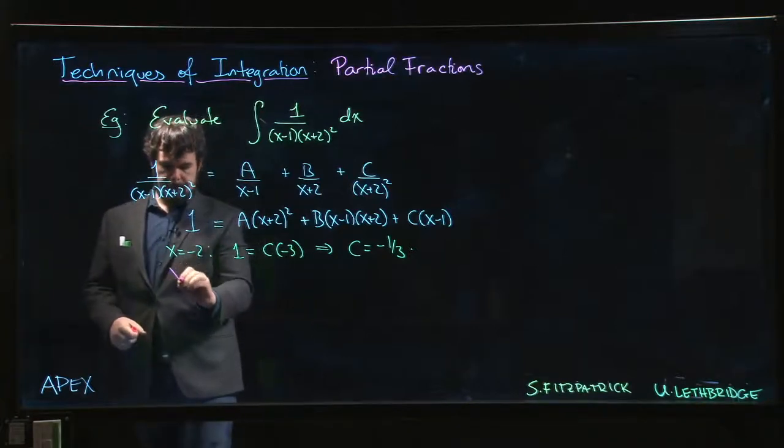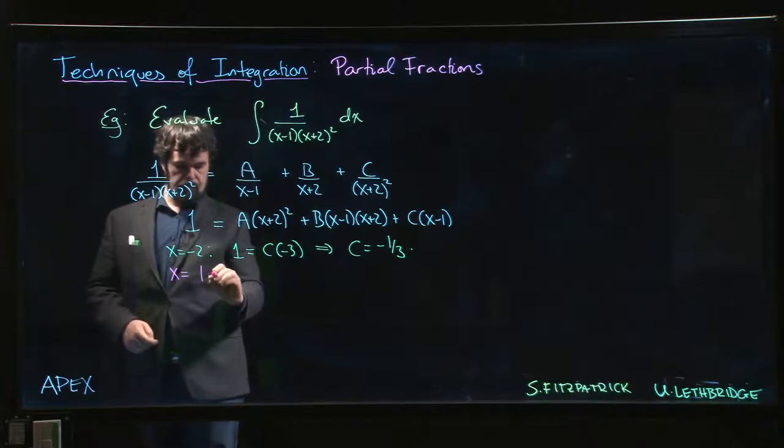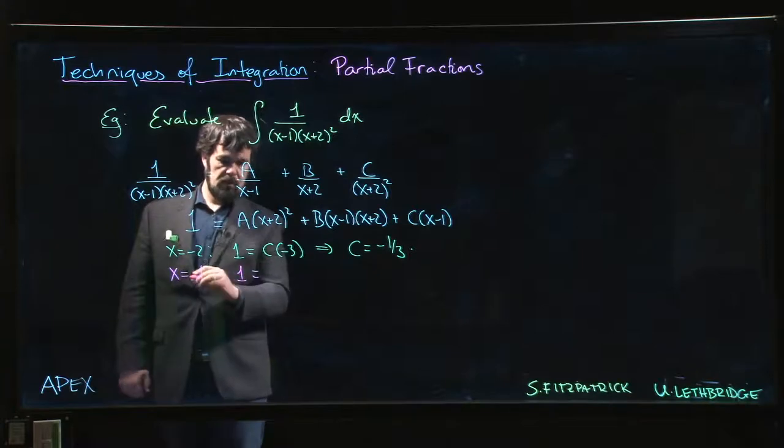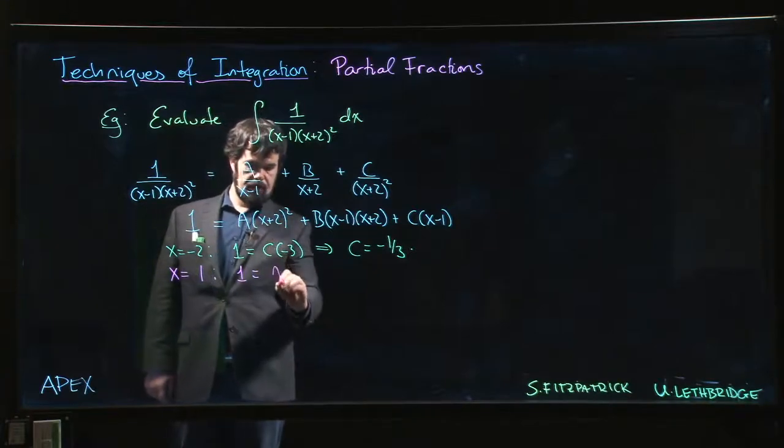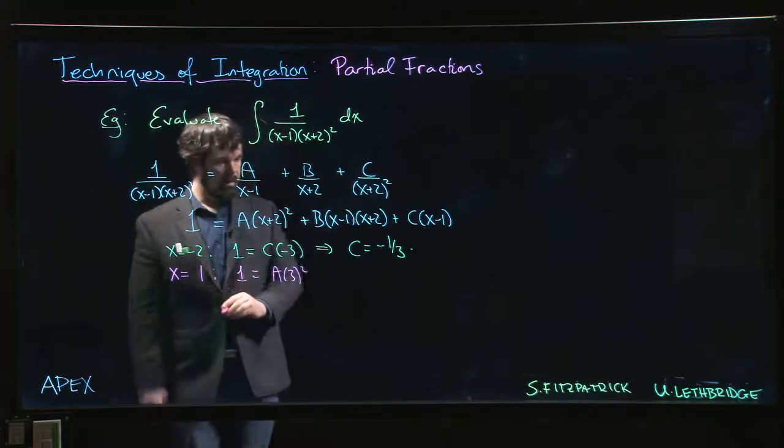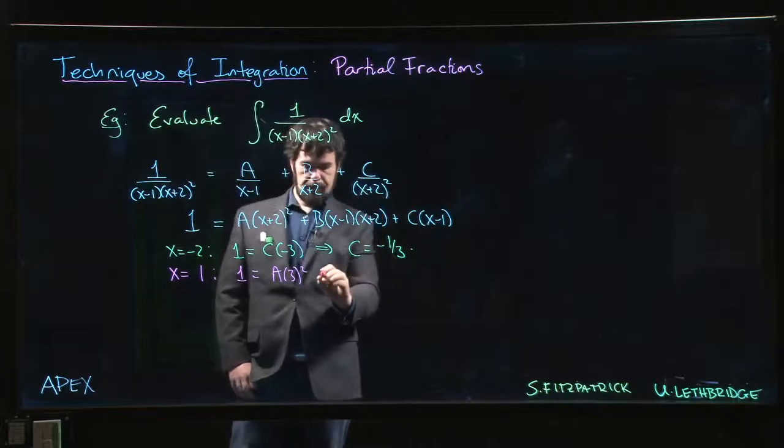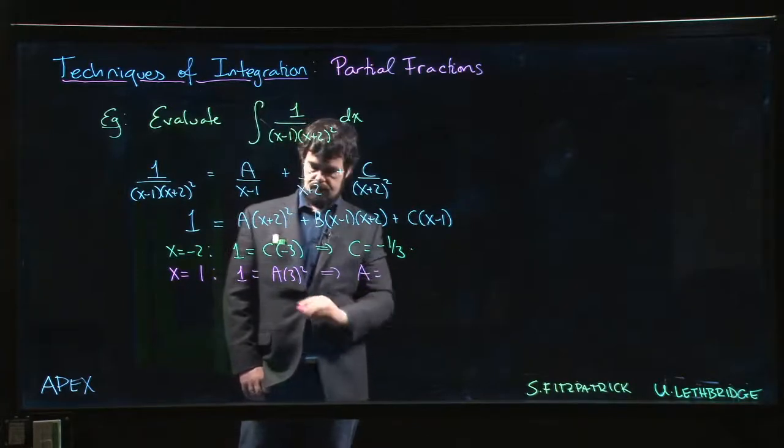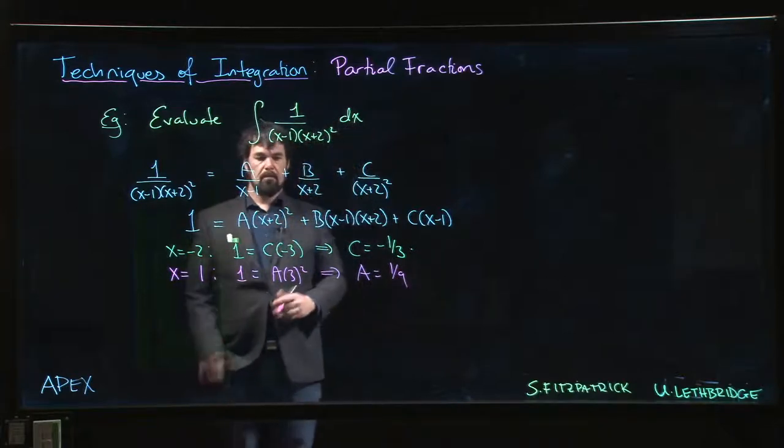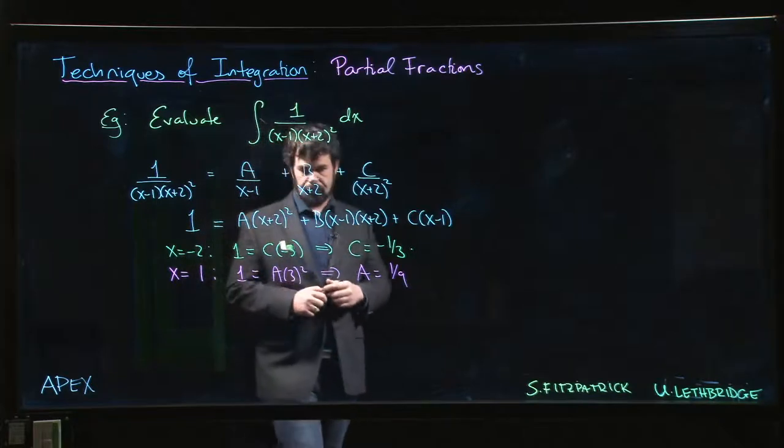So then we can try x equals 1. So 1 is equal to, this is going to be A times 3 squared plus 0 plus 0. Okay, so A is 1 over 9.